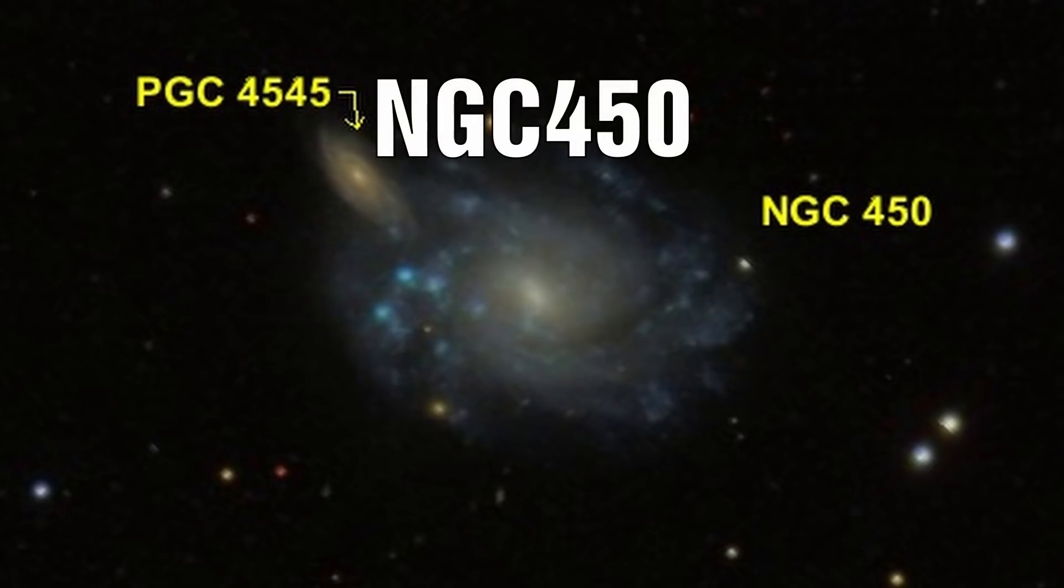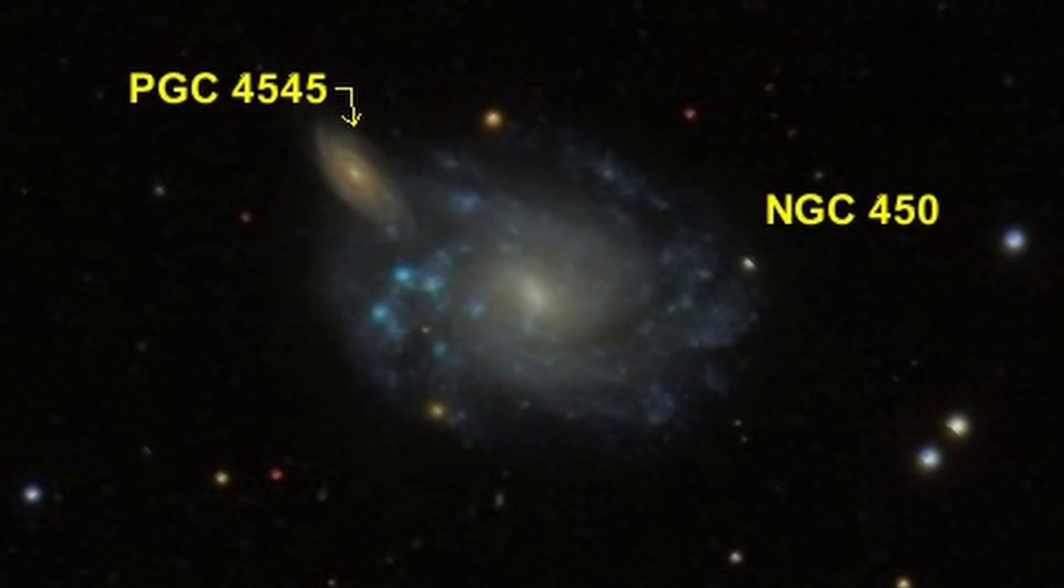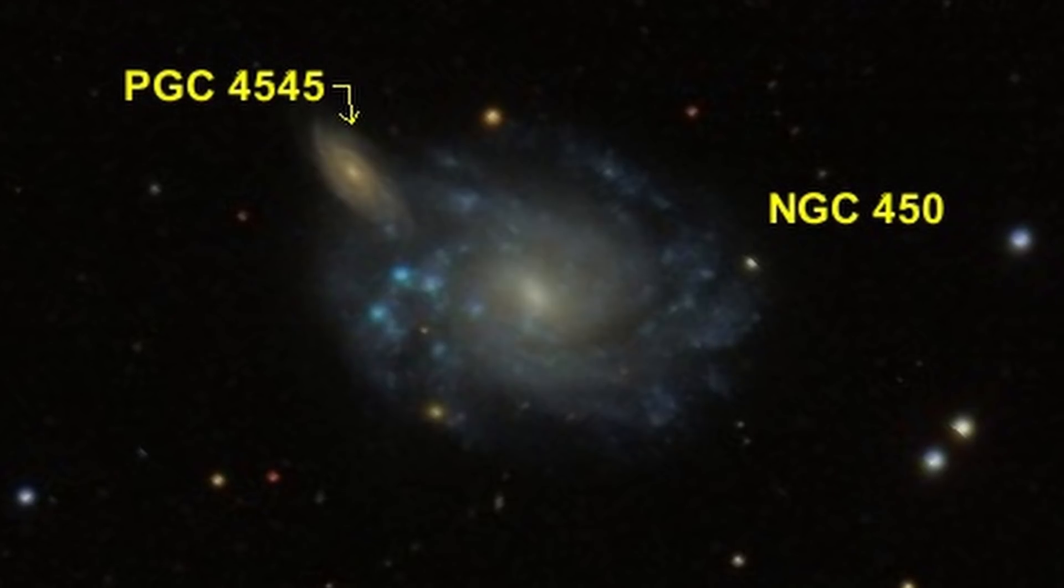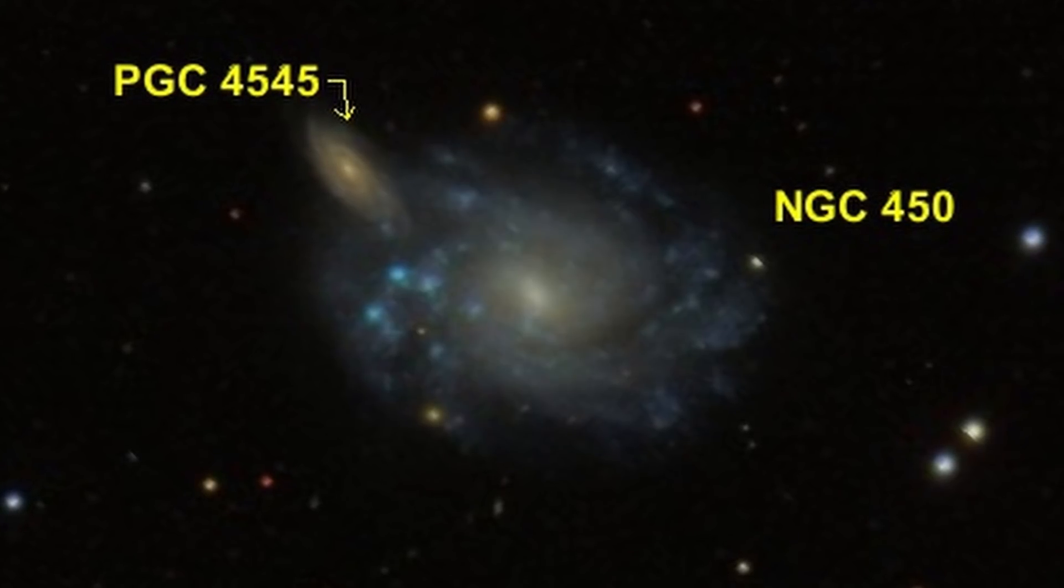It has a redshift of 1900 km per second and the close by companion has a redshift of 11600 km per second. Just at the point of the interaction there are three hydrogen regions at the same redshift as NGC 450.